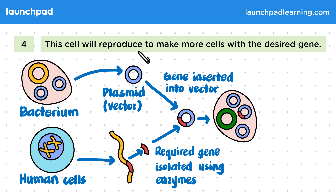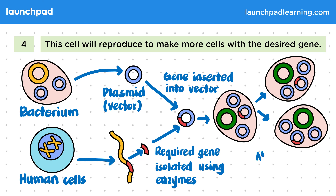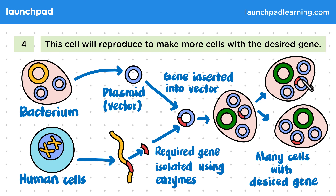Finally, this cell will reproduce to make more cells with the desired gene. In this example, this bacterium will be allowed to reproduce to make more cells containing the desired gene. You can see that each one has our required gene in red.